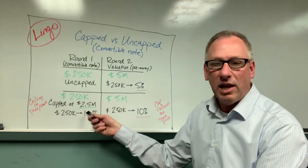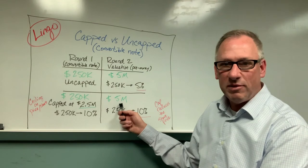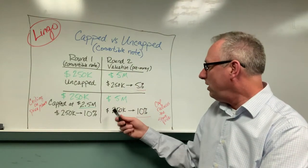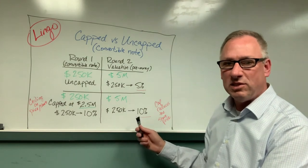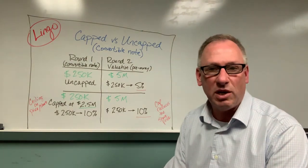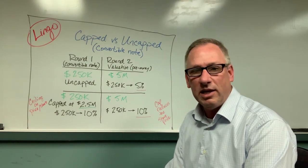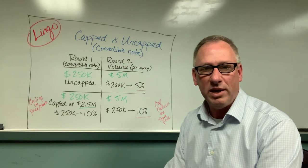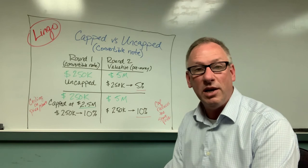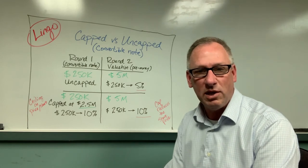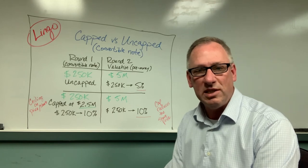By putting that line in the sand, when the future valuation comes around — and again here we have five million dollars from round two — that investor is still saying I want 10 percent. Essentially what that's doing is it's reducing the share price of that future round for that early investor. As I mentioned before, this is just one way to compensate for risk for that early stage investor in a convertible note. Another way is the discount, and we will talk about that lingo a little bit later. This has been Brian's Board with CTC.